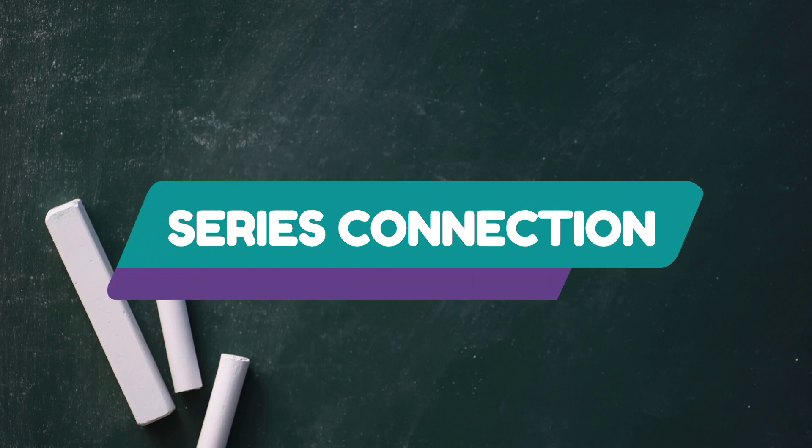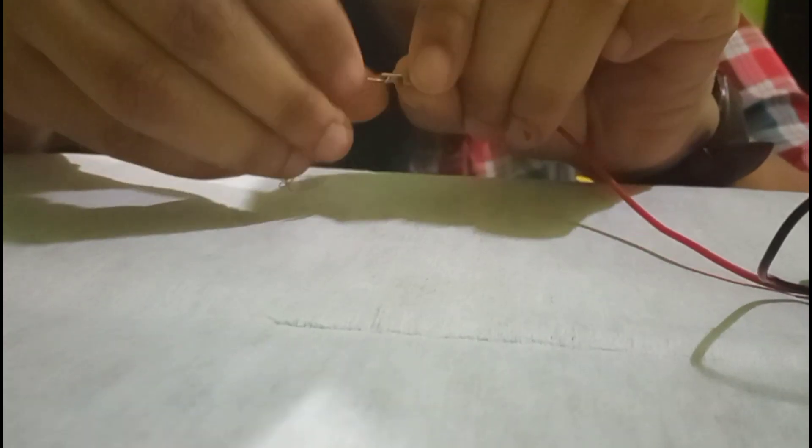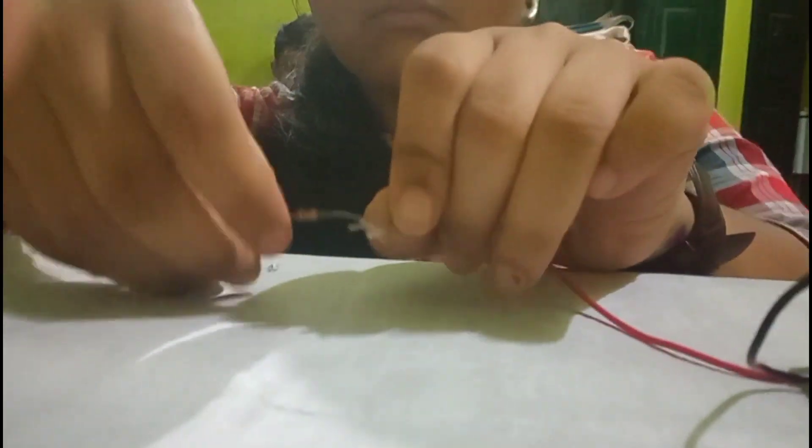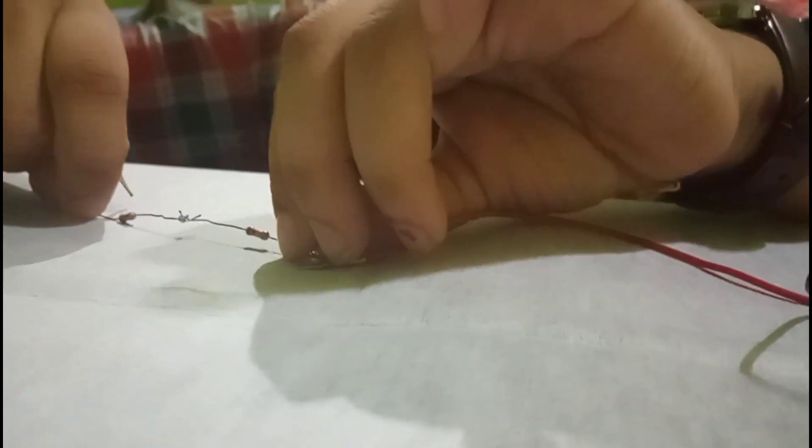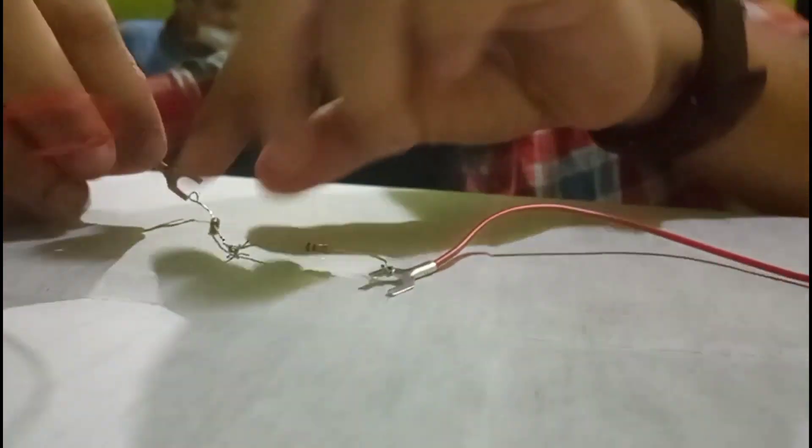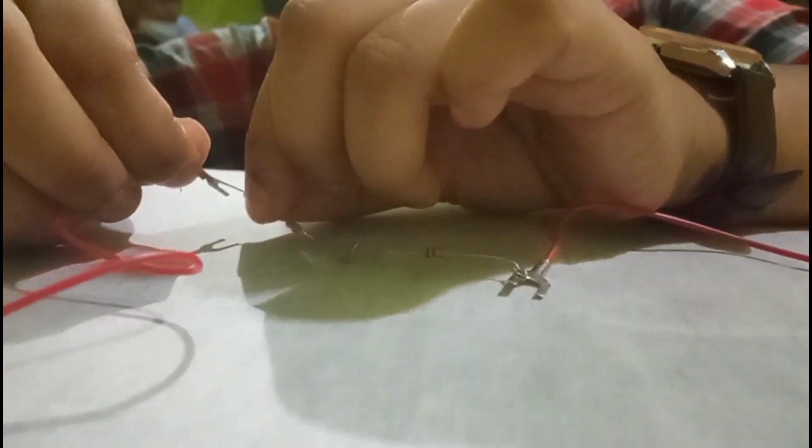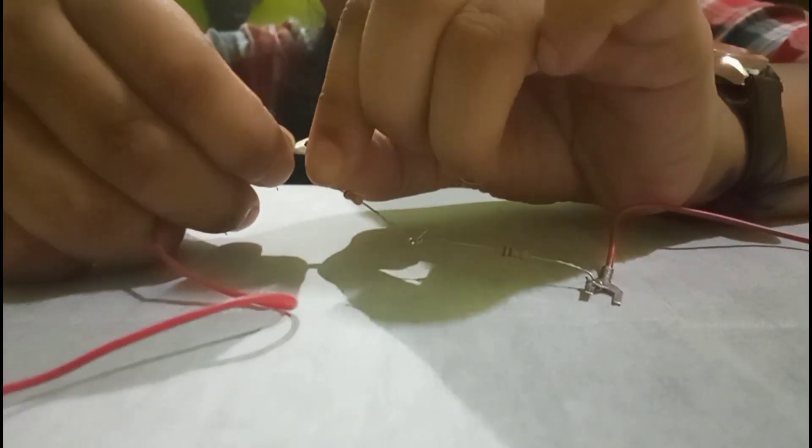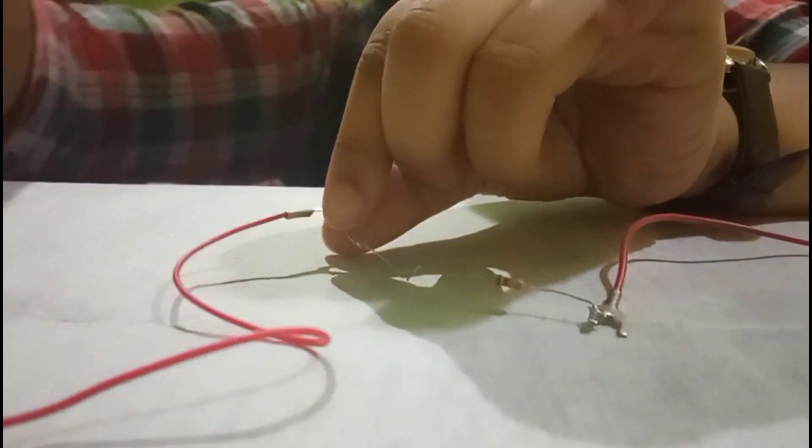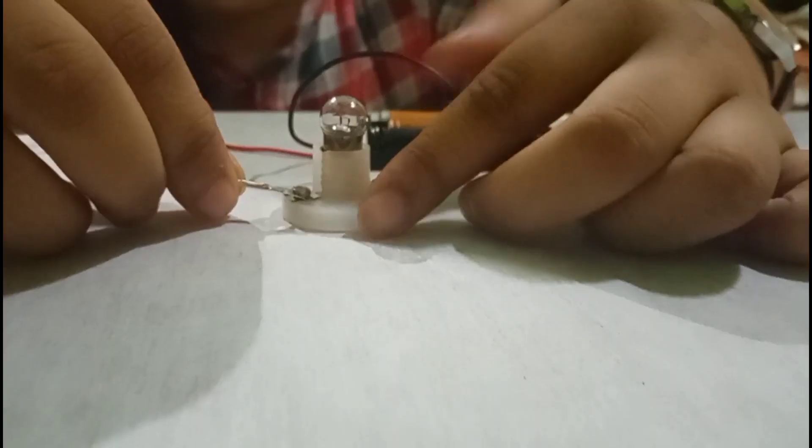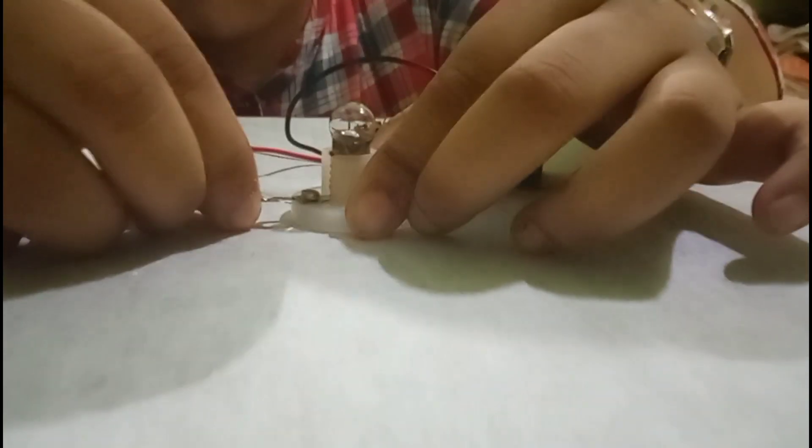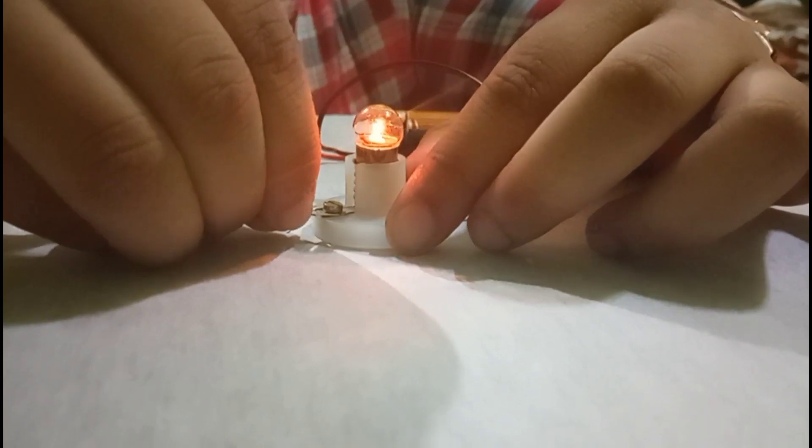Now we connect the bulb in series with two resistors. We have connected one side of the resistor with other resistor and inserted it between the circuit we made before. Now the series connection is ready.